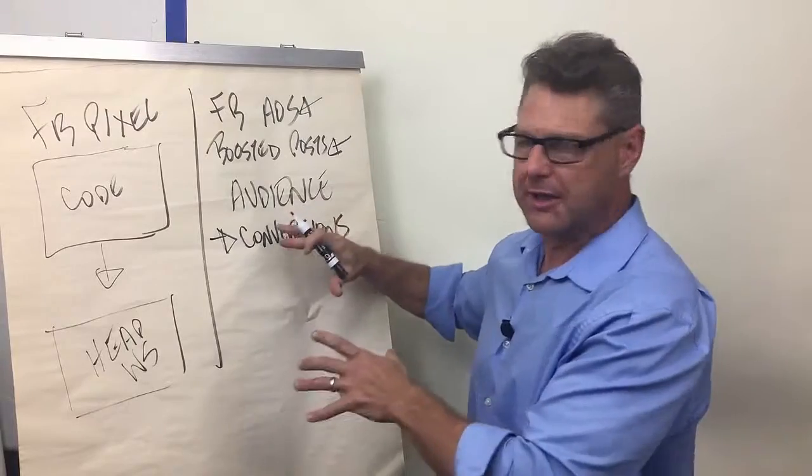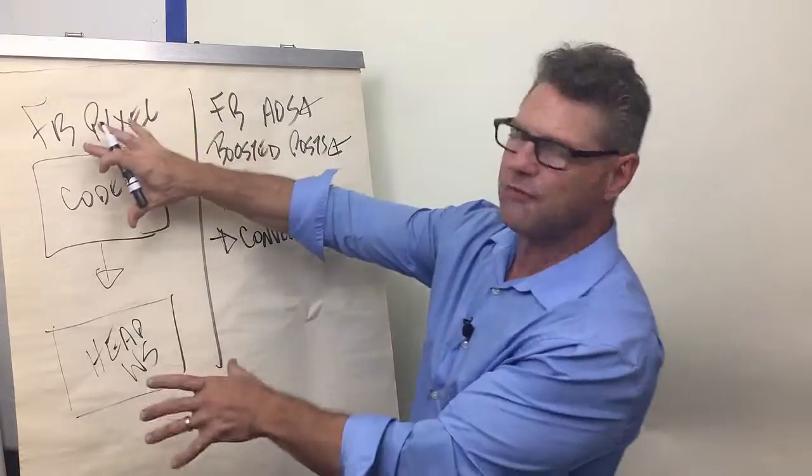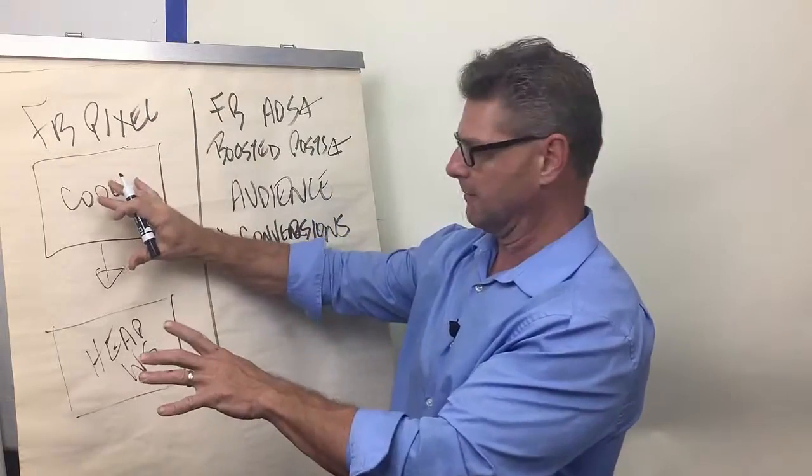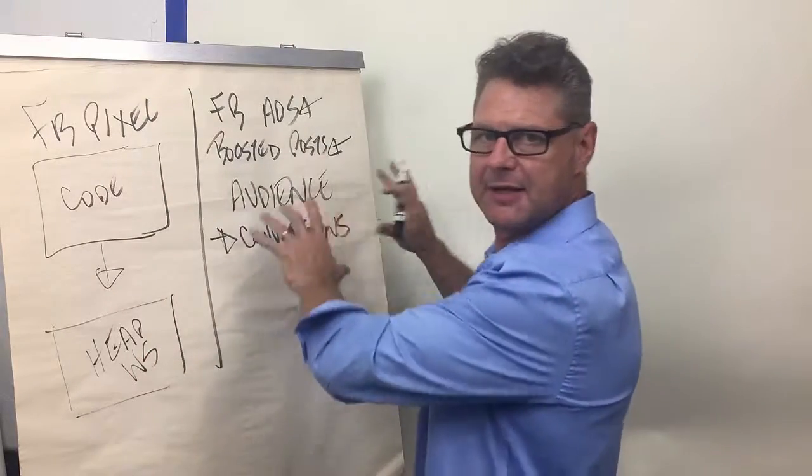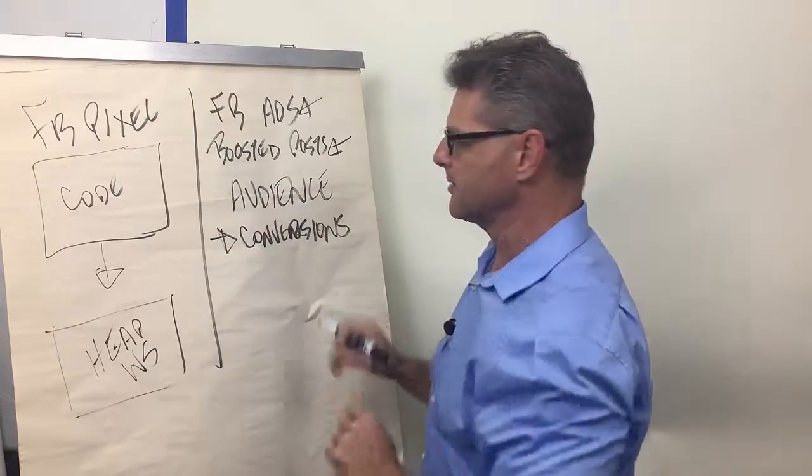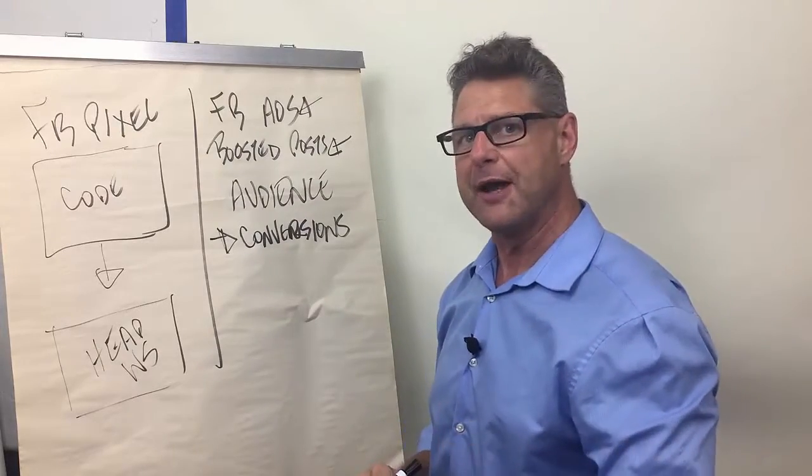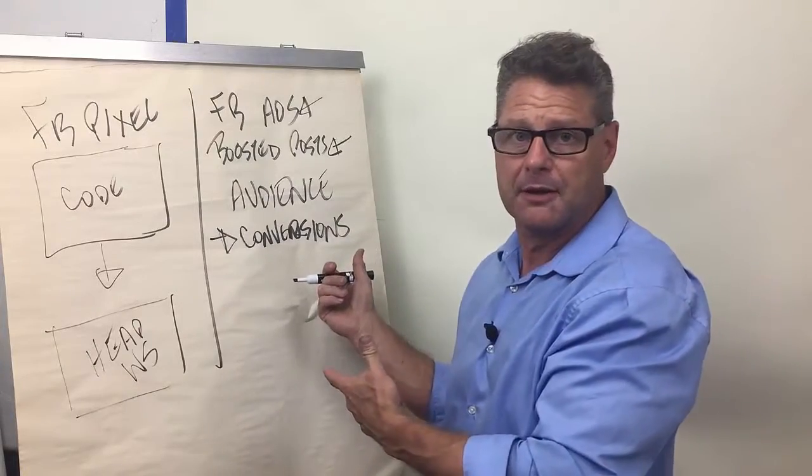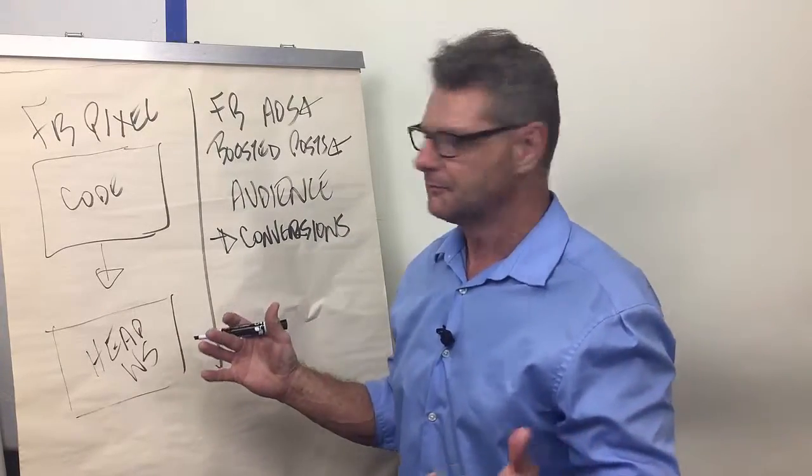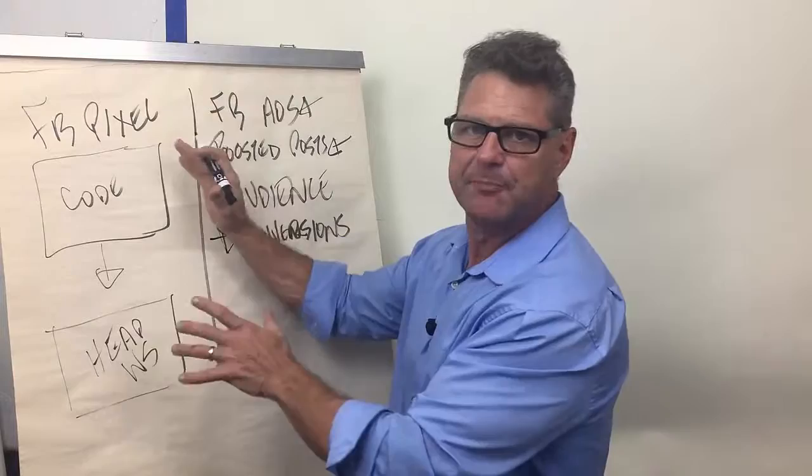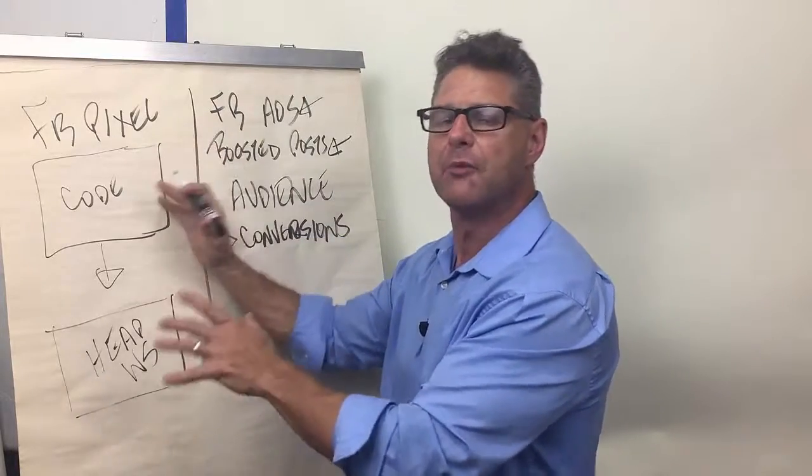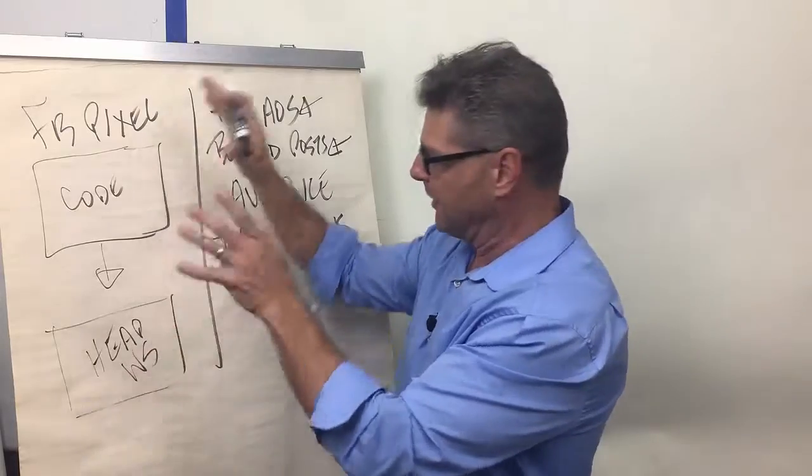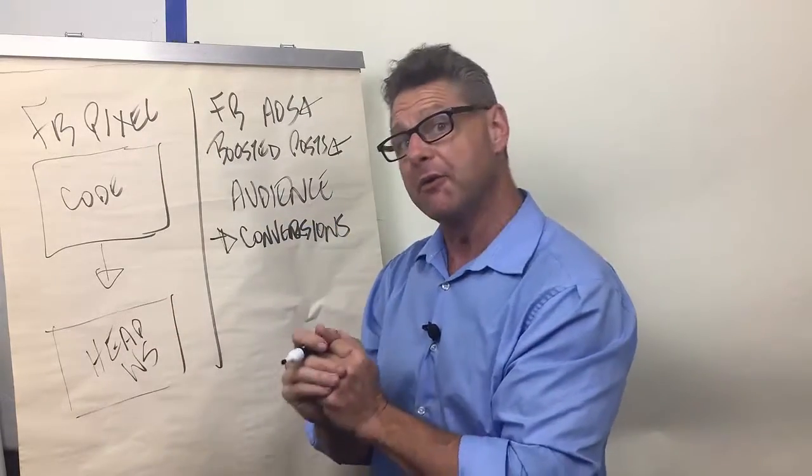And what a conversion is, is a person that came over to your website and visited at some point. It's not necessarily connected to this. Somebody could have found your website through a friend, they could have found it through a Google search, they could have found it through Facebook, they could have randomly found it. It doesn't necessarily have to be through Facebook that they got on your website. They just need to get on it, and this pixel is going to track that they were there.